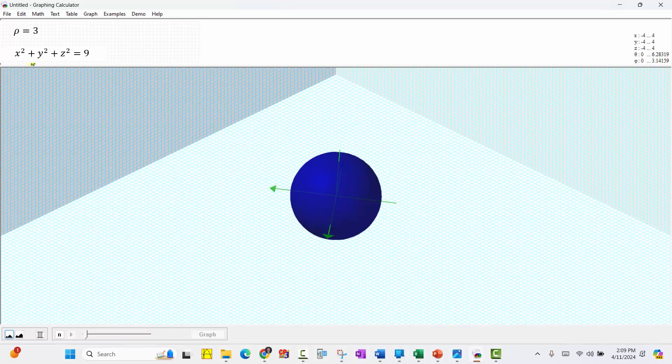And now let's graph the rectangular equation x² + y² + z² = 9 in red. The two spheres should be the same sphere, which we see they are, they're overlapping. I hope you found this helpful.